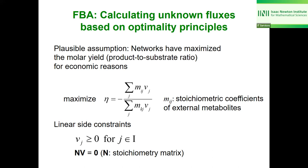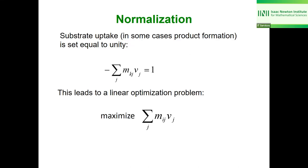We have linear side constraints: for irreversible reactions the rate is non-negative, and the steady-state condition N·v = 0, where N is the stoichiometry matrix and v is the flux vector. The objective function is a priori non-linear for yields, but with normalization — for example, assuming glucose consumption equals one — the ratio simplifies to a linear combination. This makes it a linear optimization problem, which is very appealing.